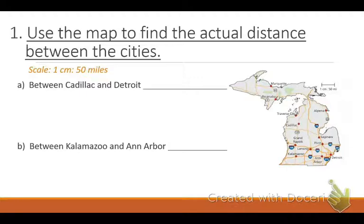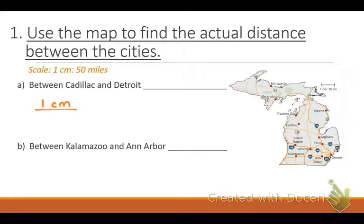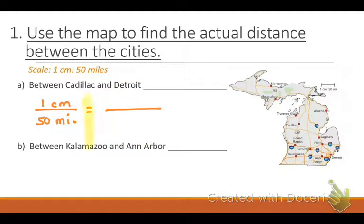I've got a scale: my scale is one centimeter equals 50 actual miles. I want you to go ahead and take your rulers and measure the distance between Cadillac and Detroit. So what we're going to do is find a proportion — remember, a proportion is two ratios that equal each other. The first thing you're always going to do is take your scale: one centimeter over 50 miles equals. This says centimeters per mile, so what do you think the units need to be over here? Centimeters per mile. How many centimeters was the distance between Cadillac and Detroit? Four. So we're going to go ahead and put four centimeters over here on this side.